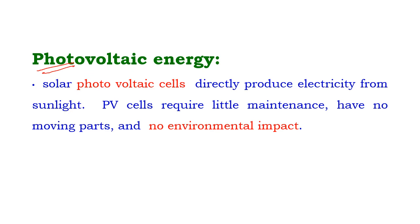Photovoltaic energy. Solar photovoltaic cells directly produce electricity from sunlight. Photovoltaic cells require only a little maintenance, have no moving parts, and cause very little or no environmental impact.